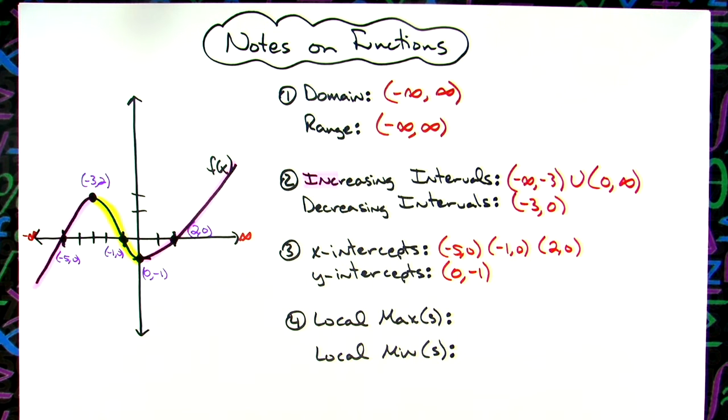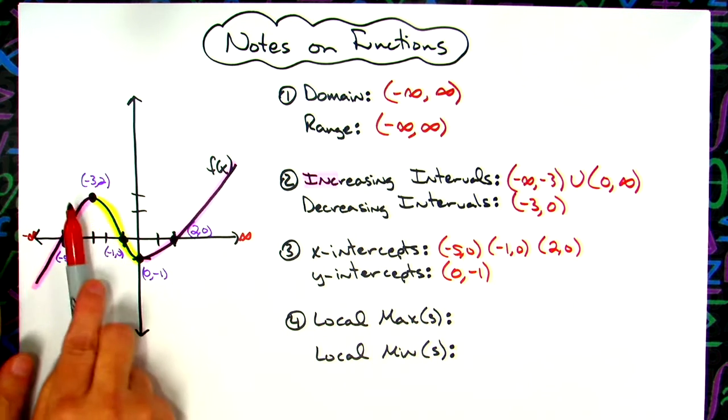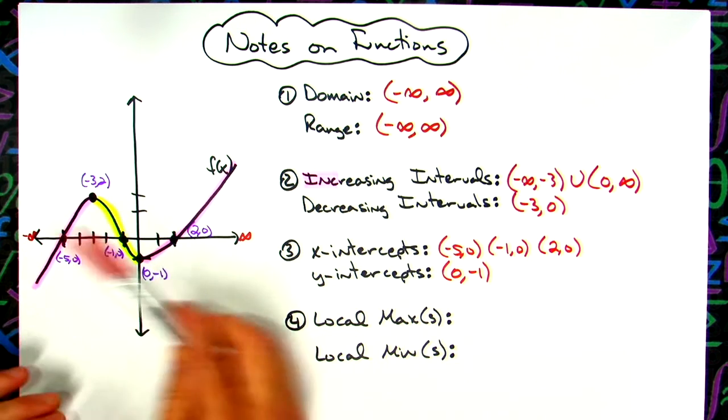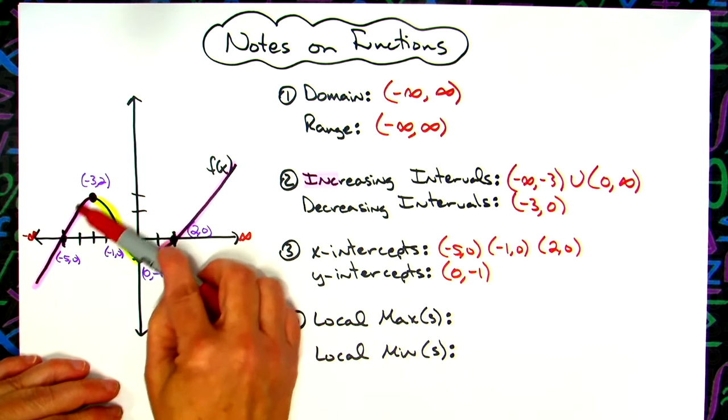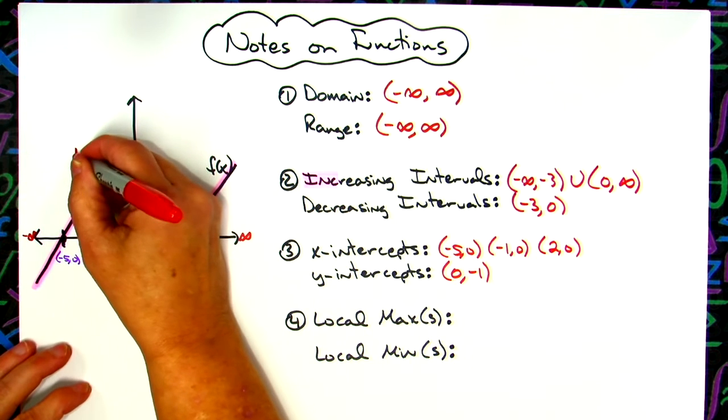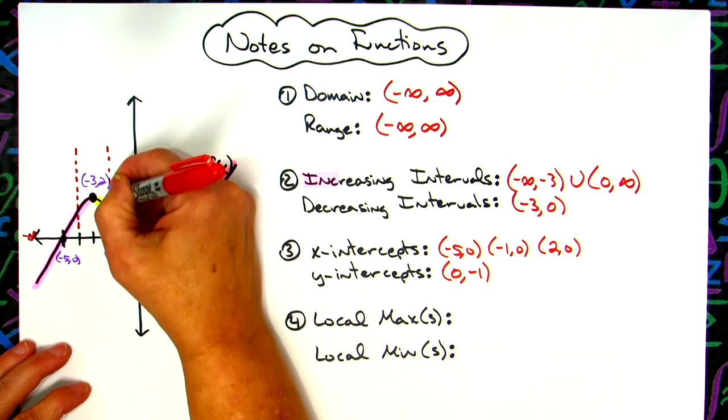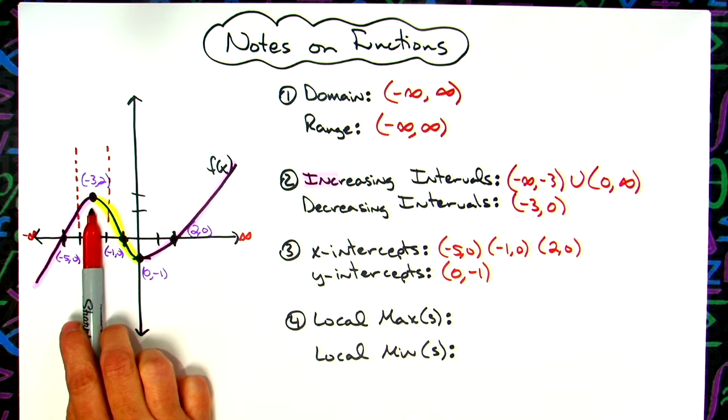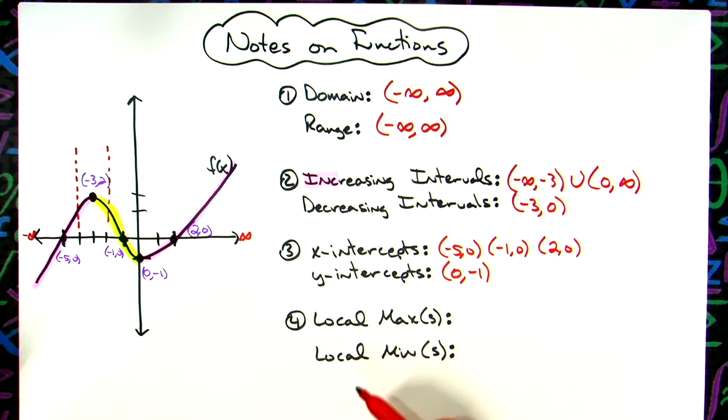Now local max and mins. Local maxes would be taking the graph and looking at just a section or just a section here. Is there a part where it peaks? Right in here is a maximum. It's referred to as a local maximum because if I just look at the graph in that small section, it's the maximum in that small section. So it's referred to as a local max.